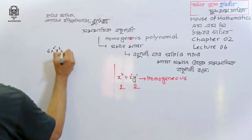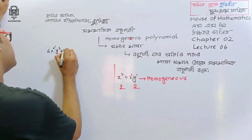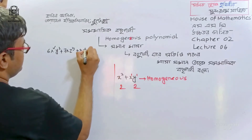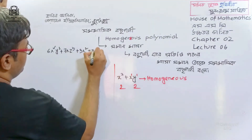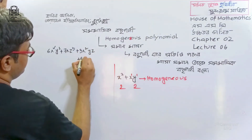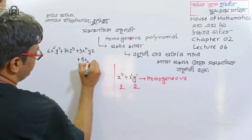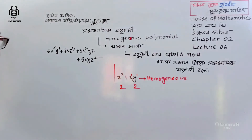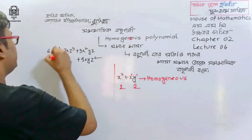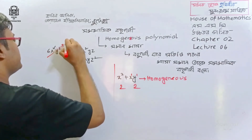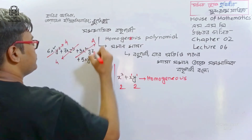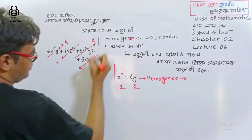Let's look at this example: 6x²y² plus 7xz³ plus 3x²yz plus 5xyz². Each of these terms — this one is degree 4, this one is degree 4, this one is degree 4, this one is degree 4.